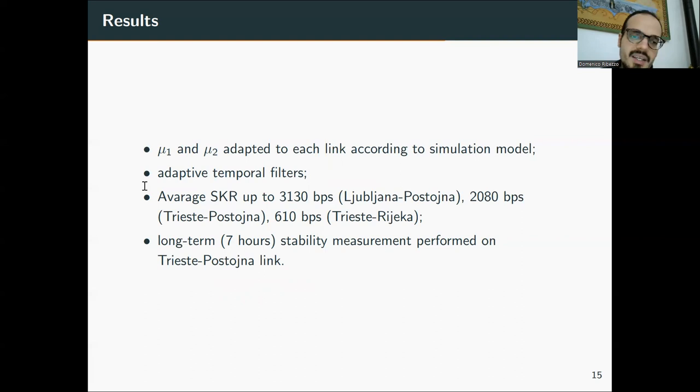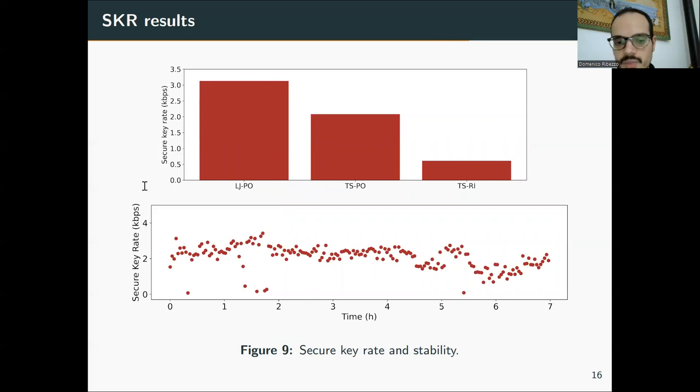We got a key rate of 3,100 for Ljubljana-Postojna, and more than 2,000, 2,080 bits per second for Trieste-Postojna link, and over 600 bits per second for Trieste-Rijeka link. And we also got a seven hour long-term stability measurement on the Trieste-Postojna link. You can see here in the bottom, each point is a block size, so around 30 seconds of data, and you can see that except in a few cases where the key dropped to zero, close to zero, because there were some environmental disturbance that the phase loop was not able to compensate, but in general after that, the value went again up, and it was stable, pretty stable for all the seven hours of measurement.